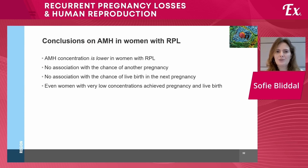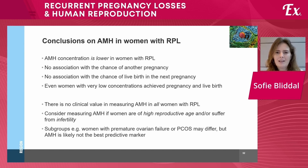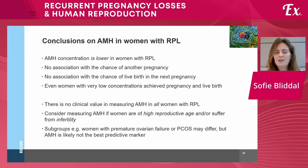In conclusion, AMH concentration is lower in women with recurrent pregnancy loss, but there is no association with the chance of another pregnancy, and no association with the chance of live birth in the next pregnancy. Even women with very low concentrations achieve pregnancy and live birth. Our overall conclusion is that there is absolutely no clinical value in measuring AMH in all women with recurrent pregnancy loss. You could consider measuring AMH if women are of advanced reproductive age or suffer from infertility where AMH levels could influence treatment offered. Some subgroups such as those with premature ovarian failure or PCOS may differ, but even so, we don't believe AMH is the best predictive marker.